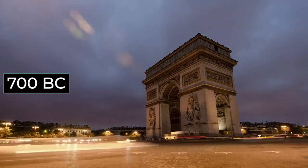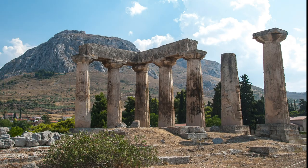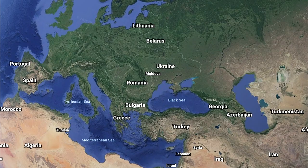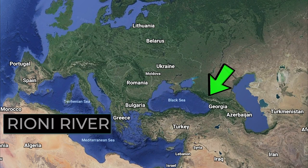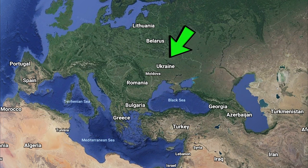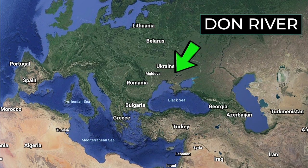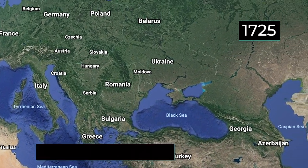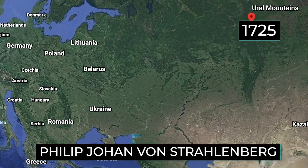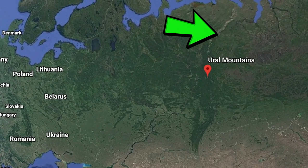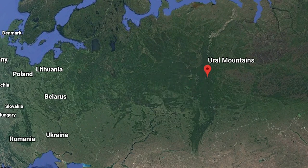Way back in 700 BC, Greek geographers had split the known world into three parts: Asia, Europe, and Africa. The border of Asia and Europe was along the Rioni River in present-day Georgia. By 320 BC, the division had moved to follow the Don River west of the Urals in present-day Ukraine. It wasn't until 1725 when German geographer Philipp Johann von Strahlenburg used the modern-day boundary along the Ural Mountains that we got a more geographically significant border.